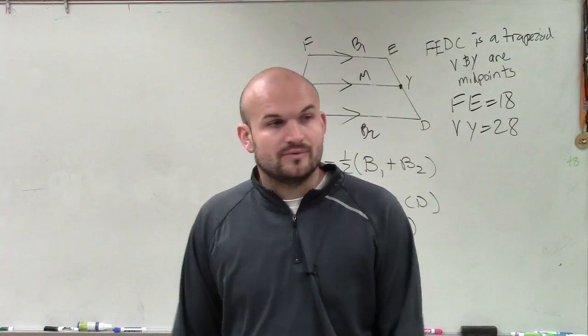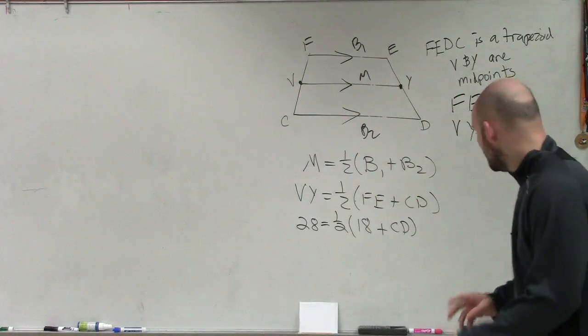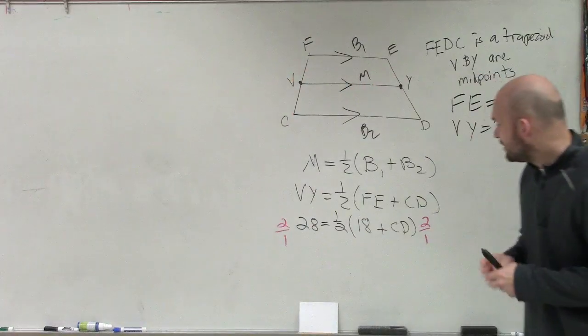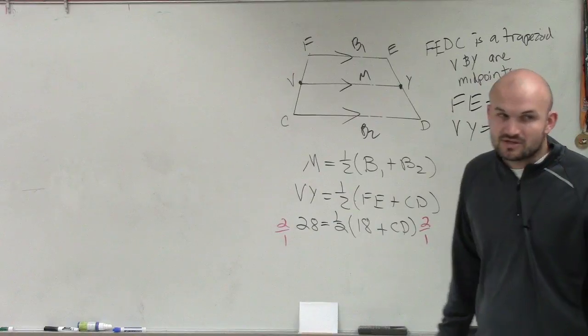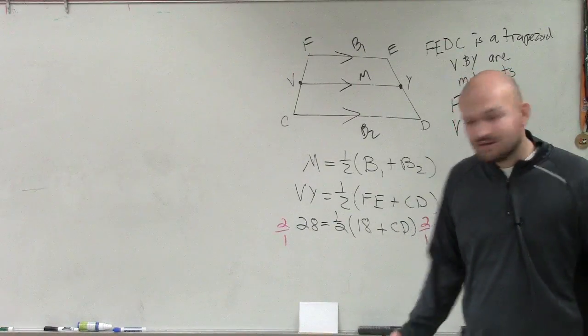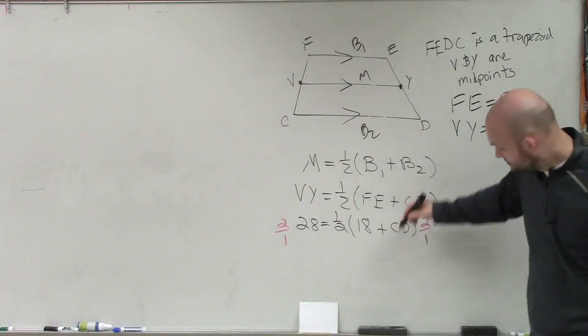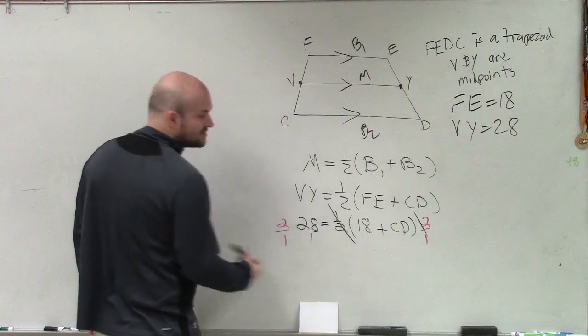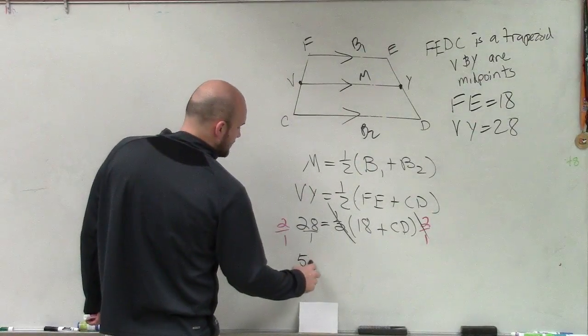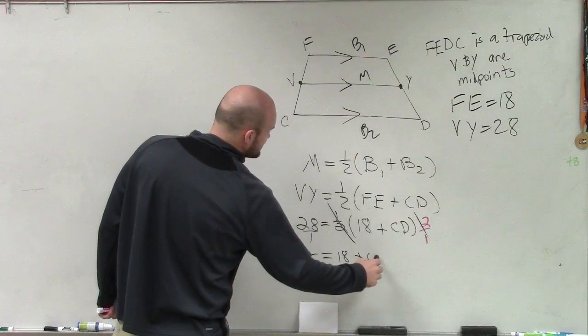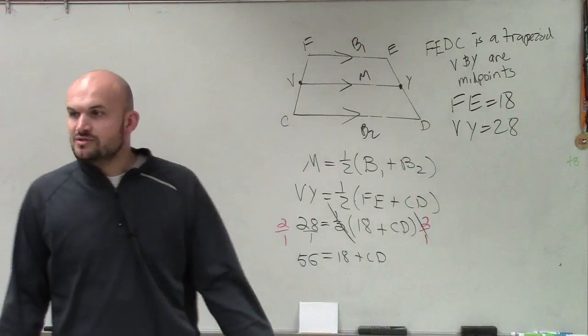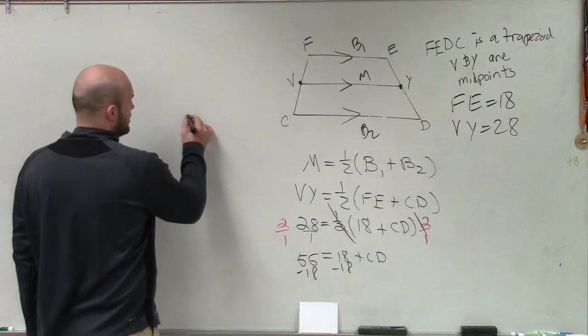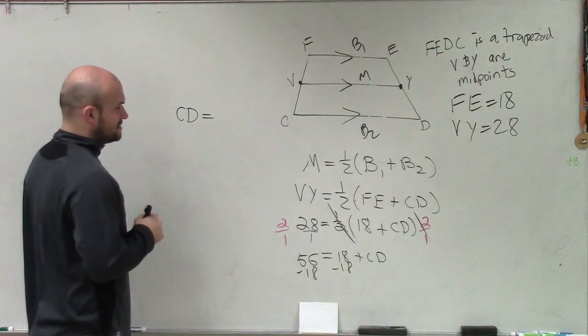So now what we have to do is we have to solve. So how are you going to solve this? Well, we've got to get rid of this 1 half. So to do that, I'm going to multiply by the reciprocal on both sides. When multiplying by the reciprocal, any number multiplied by its reciprocal equals 1. Think of this, 3 fourths times 4 over 3 is just 1. 2 over 1 times 1 half is 1. And then 2 over 1 times 28 is just 2 times 28 is 56 equals 18 plus CD. So now I subtract 18, and therefore my final answer is CD is equal to 36.